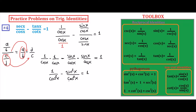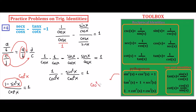Now we have a common denominator, so we can merge: one minus sine squared x over cosine squared x. By the Pythagorean identity, one minus sine squared x equals cosine squared x. So we have cosine squared x over cosine squared x, and anything divided by itself equals one. We verify this expression equals one.